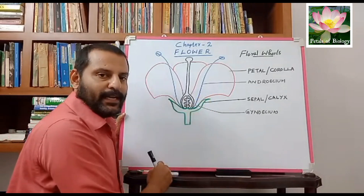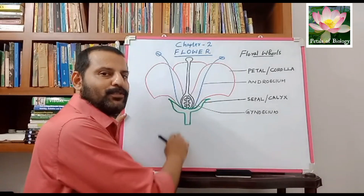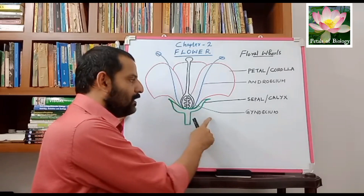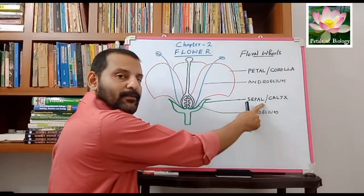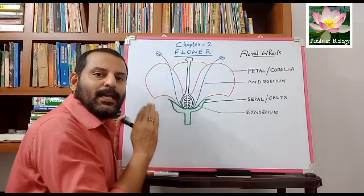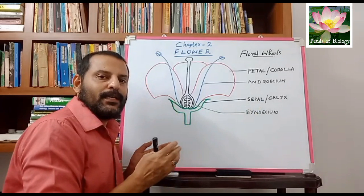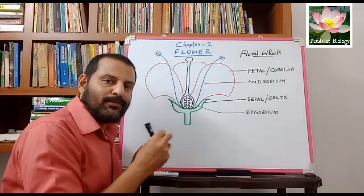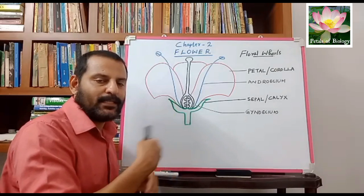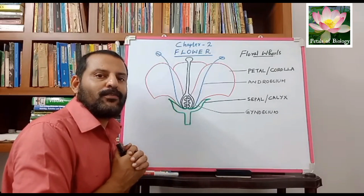Looking from the base to the top, the first part of the flower is the sepal. This green part is known as the sepal. If the sepals are free, we call the individual part a sepal; together they form a cup-shaped structure called the calyx.